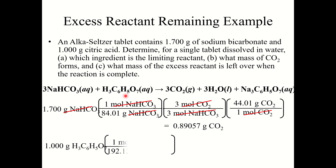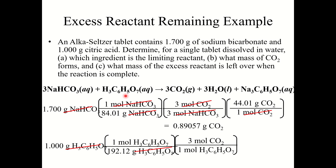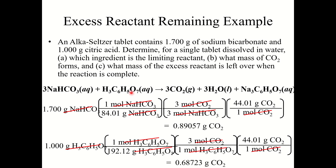Repeating the process for citric acid: 1 gram citric acid, convert to moles, then from moles citric acid to moles CO2 using those coefficients, and finally convert to grams CO2. Citric acid could produce 0.68723 grams of CO2. Since part B asked for the mass of CO2, it was efficient to convert both reactants directly to grams CO2. We can now answer both A and B: citric acid is the limiting reactant and 0.68723 grams of CO2 would form.